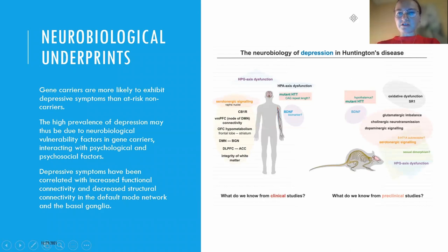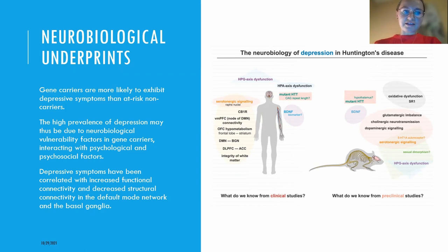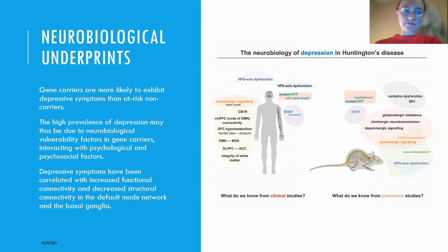The neurobiology of depression in Huntington's disease is very complex, with different molecular mechanisms probably involved in this process. Gene carriers are more likely to exhibit depressive symptoms than at-risk non-carriers, and the high prevalence of depression may be due to neurobiological vulnerability factors in gene carriers interacting with psychological and psychosocial factors.